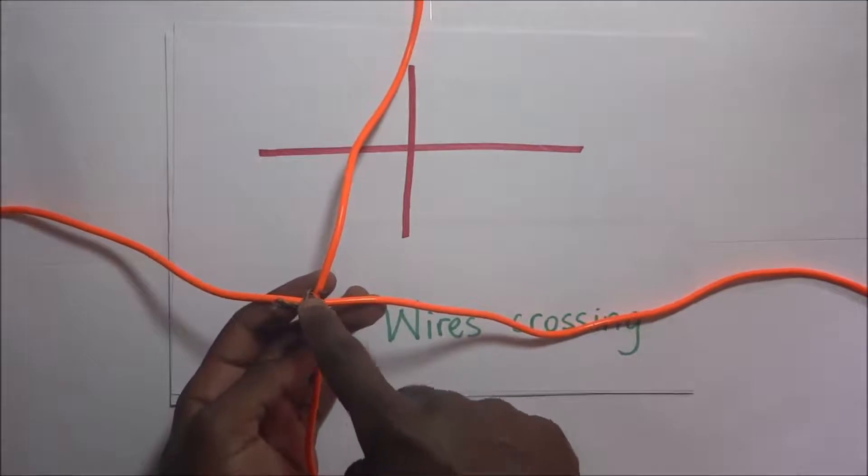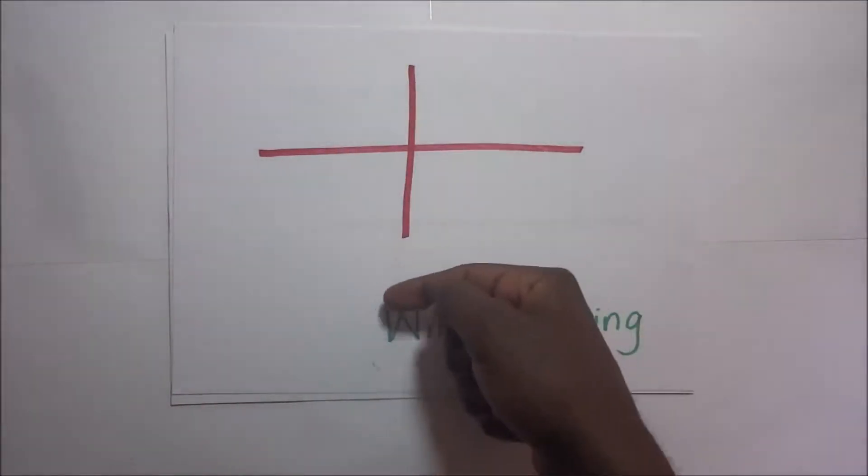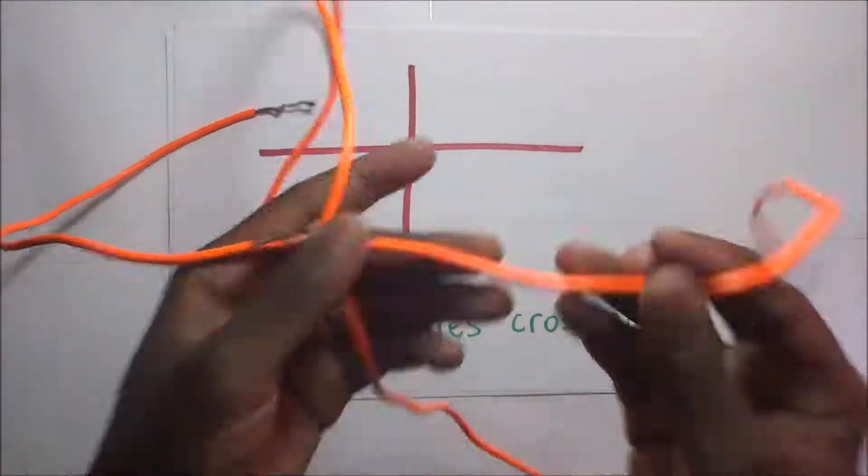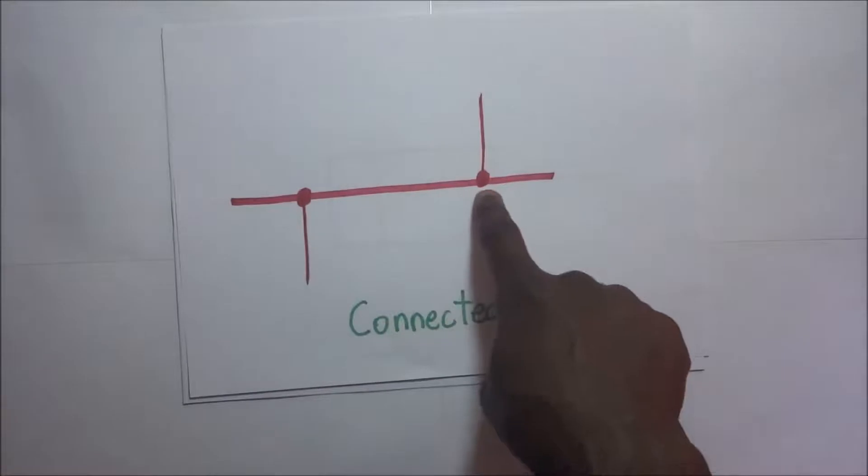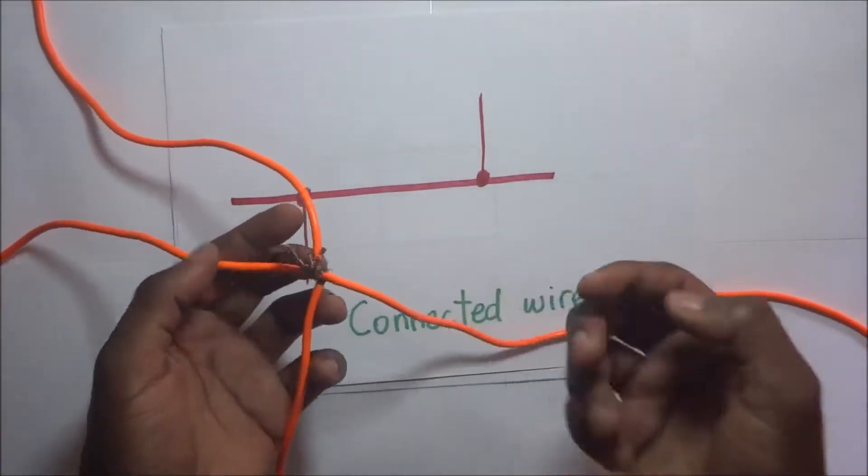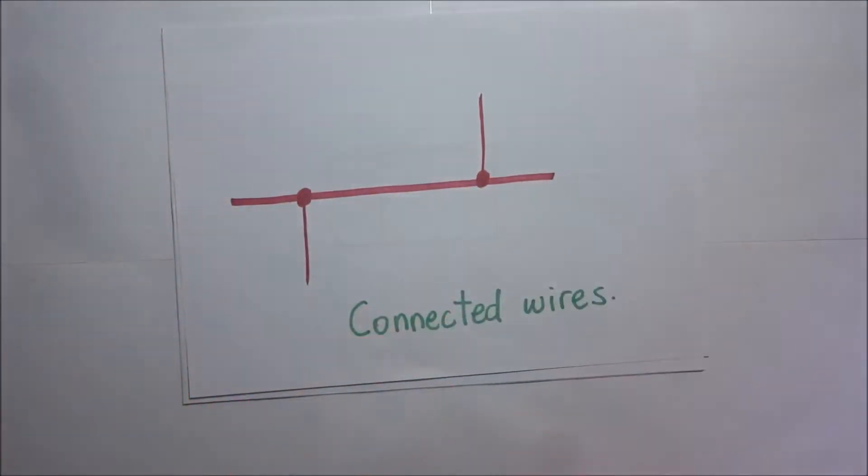When wires are crossing, that's how you represent it. But if wires are joined like the way it is right here, you put a dot to show it. To signify that these wires are actually connected—they're not just crossing each other but are connected—that's the dot to show it.